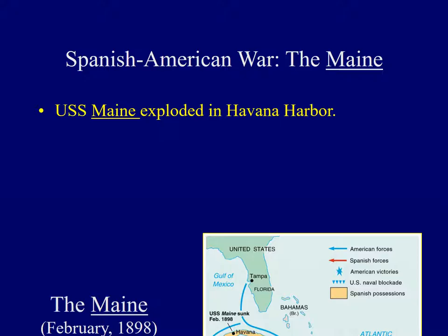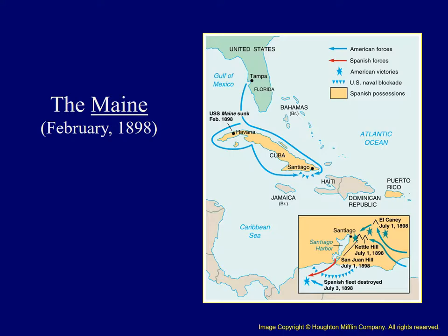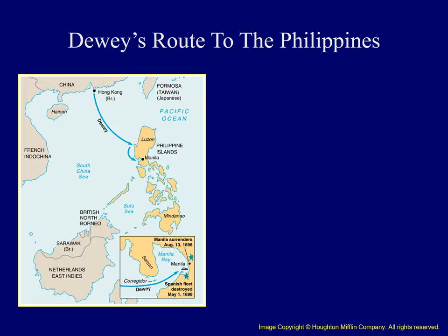While the media sparked American interest in events going on in Cuba, it was the sinking of an American battleship, the USS Maine, in February of 1898 that led to actual fighting. The Maine was located in Havana Harbor in early 1898 when an explosion rocked the ship. At the time, it was believed that the Spanish had mined the harbor, causing the deaths of over 200 Americans. However, it's now believed that an internal explosion, probably from the boiler room, was the cause of the Maine's demise — but at the time, the true cause of the explosion was unknown.